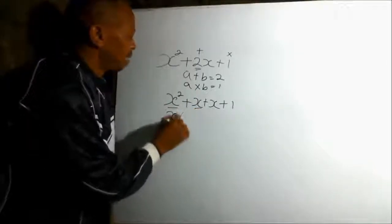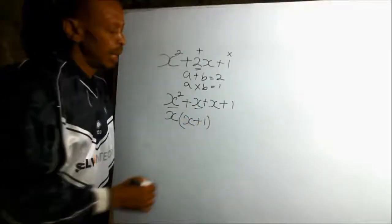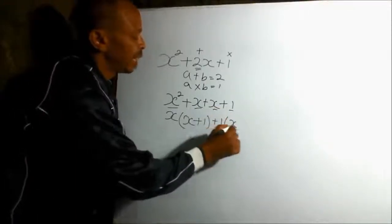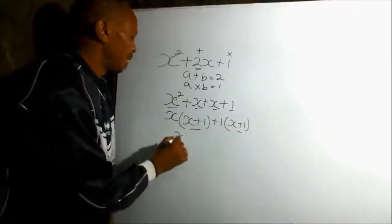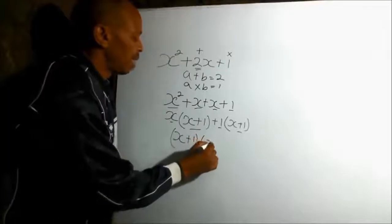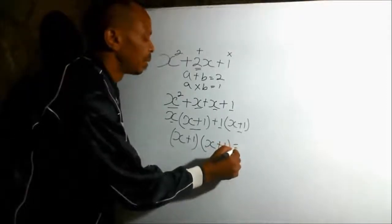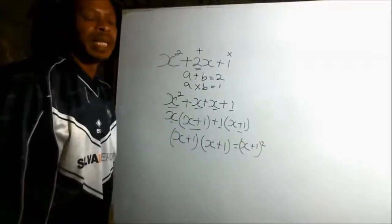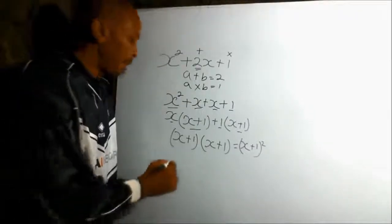We factor out x, and we are left with x from x squared. When you factor out x here, you will be left with 1. Then we factor 1, and you will be left with x plus 1. We realize that x plus 1 is common to both, so we factor it out, and we will be left with x plus 1. We refer to these as repeated roots, which we can write as (x + 1) squared. When we have a quadratic expression with a repeated root, we say it is a perfect square.